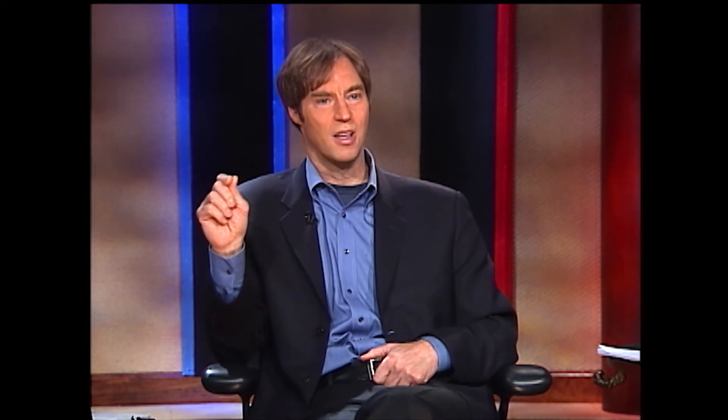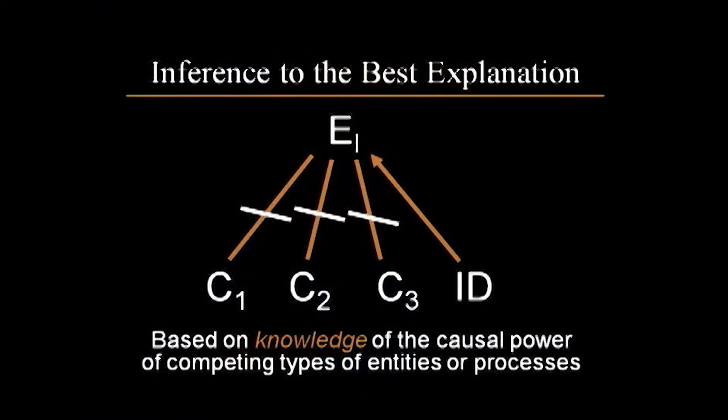But that's not the way we're arguing. That's not the way I'm arguing in Signature in the Cell. My argument is that we don't know of a natural process that can produce the effect in question — true, that's part of the argument — but we do know of a cause that's capable of producing the effect in question. The effect in question is information, specified complexity, specific functional information. We do know of a cause that can produce that: it's intelligence. Therefore, based on what we know — not what we don't know — but what we know about the cause and effect structure of the world, intelligence is the best explanation for the origin of the information we see in DNA.